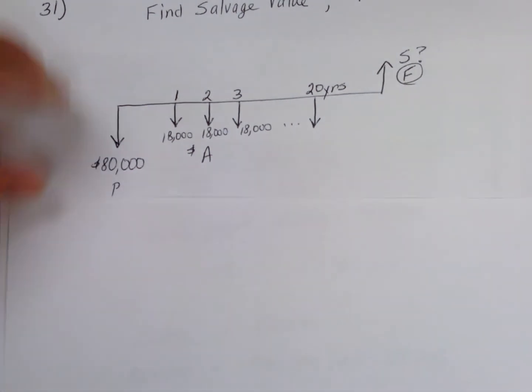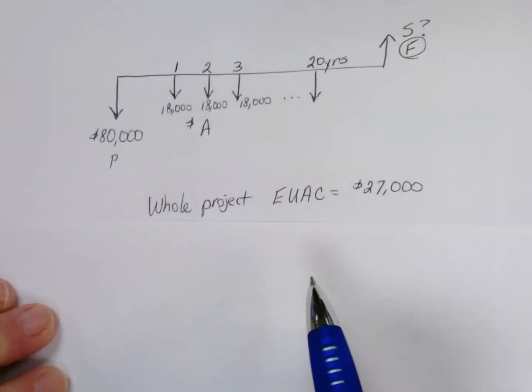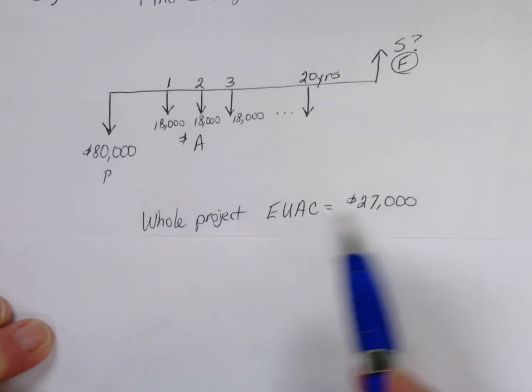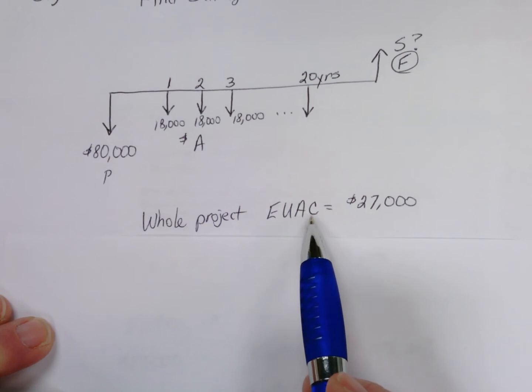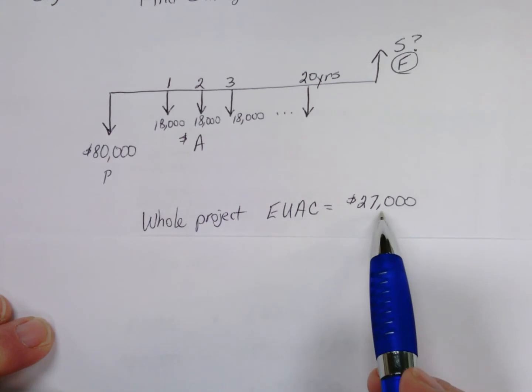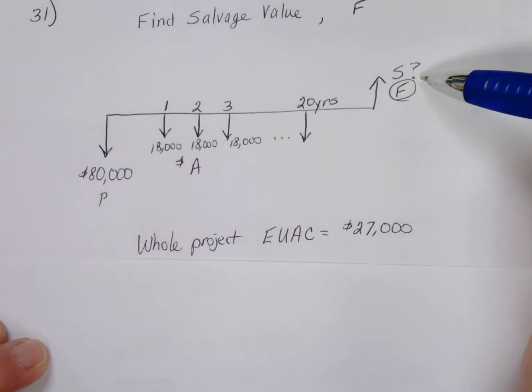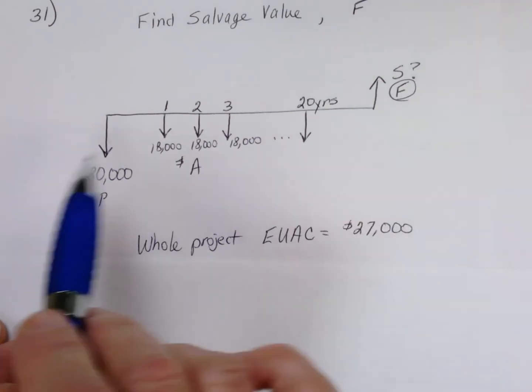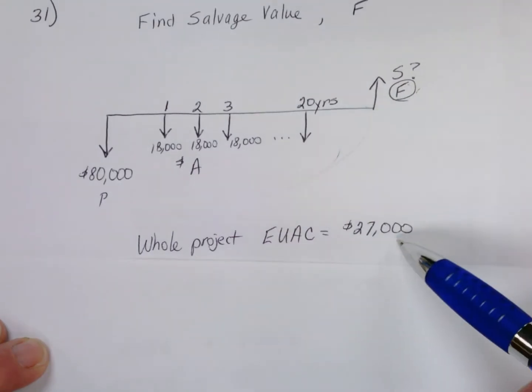We're asked to find the future salvage value of the equipment such that the average cost of the entire project, running this machine, equals an average cost of $27,000 per year. That's an equal uniform annual cost desired of $27,000. So what do we have to sell this asset for at the end of 20 years to make the average cash flows, including that future cash flow, average out to $27,000 per year?